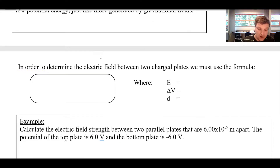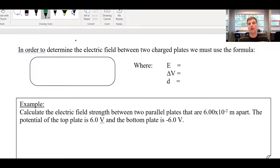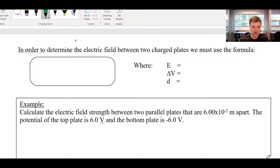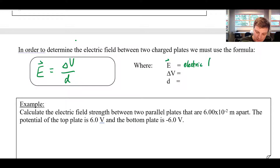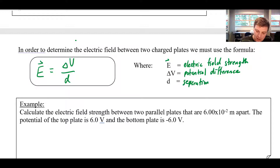Let's look at one more formula. The strength of the electric field depends on how close the plates are and on the potential difference between them. A stronger battery with a bigger potential difference gives a stronger field. It turns out that the electric field strength E equals the potential difference ΔV divided by the separation d of the plates.